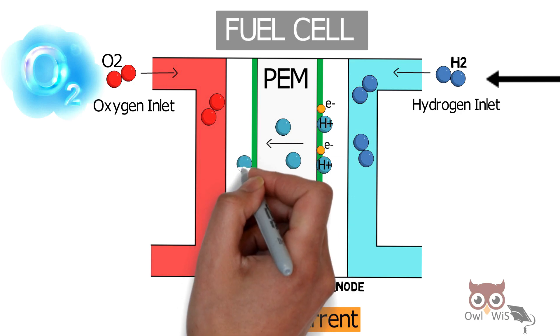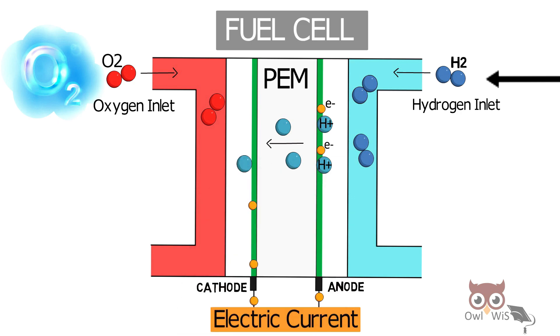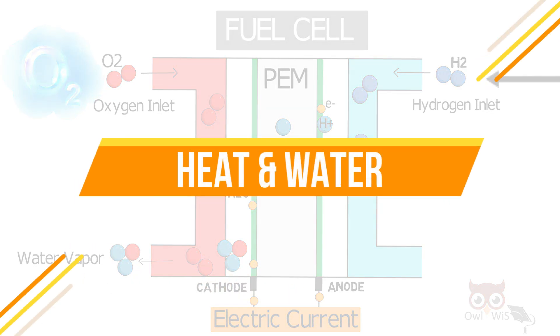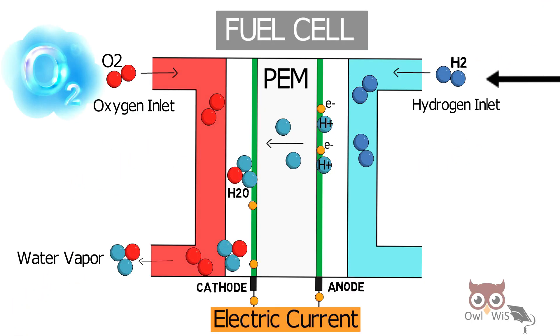On the cathode side, hydrogen protons that cross over to the catalyst then bind with oxygen in order to form pure water, producing only heat and water in this entire process. Also, the unused hydrogen is recycled.